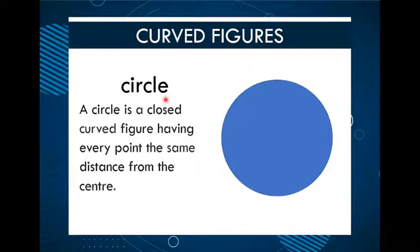Here we have the circle. A circle is a closed curved figure having every point the same distance from the center. It has one solid line that is completely curved. So we know that a circle is a curved shape.